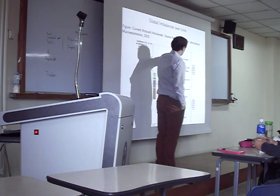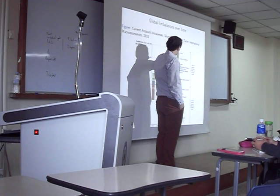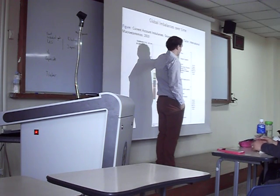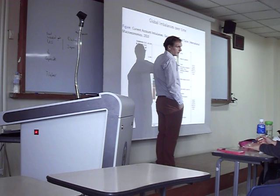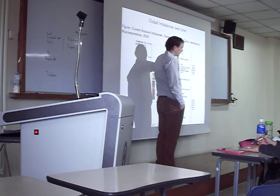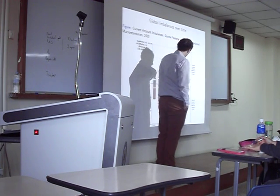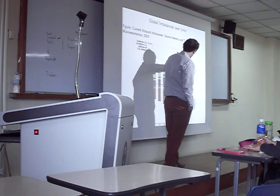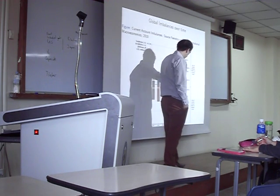China, Japan, oil exporters, and Russia are the main surplus countries. The deficit countries include the US, UK, Spain, and Australia. The simple story: China, oil economies, and Japan are roughly on one side matching the US on the other.